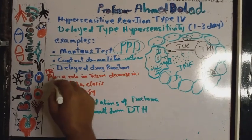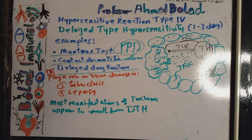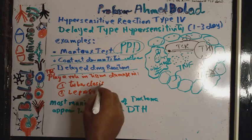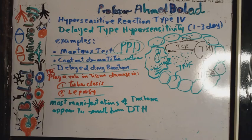Similarly, in cases of contact dermatitis or delayed drug reaction, these interactions may be seen. This delayed type hypersensitivity may also play a role in tissue damage seen in infections by tuberculosis and leprosy. It also appears that most manifestations in chlamydial infection — for example, trachoma — appear to be a result of delayed type hypersensitivity.